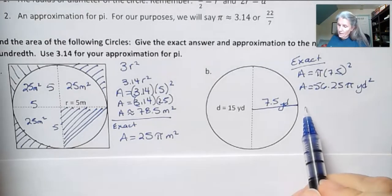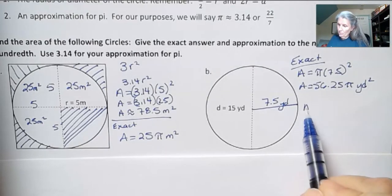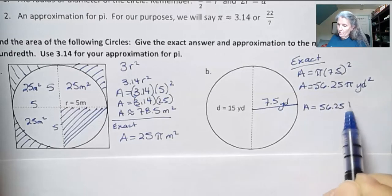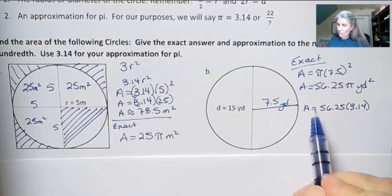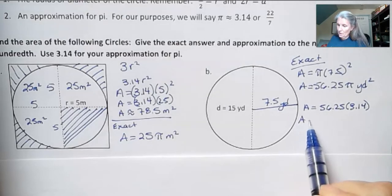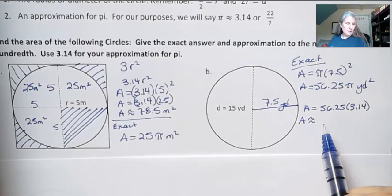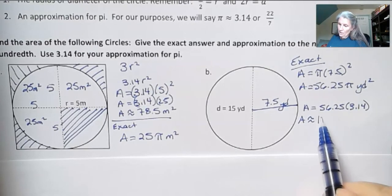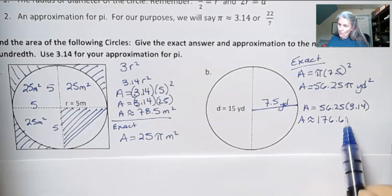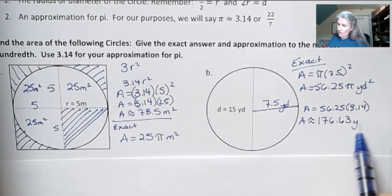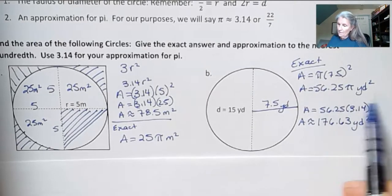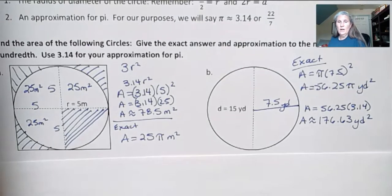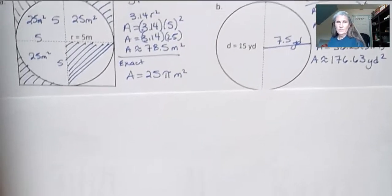And then to approximate that, I would go ahead and multiply the 56.25 times 3.14. Because again, 3.14 is my approximation. 56.25 times 3.14 is 176.63 rounded to the nearest hundredths. So that's the approximation. And this is the exact. Exact means that you have not approximated pi.